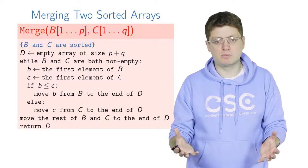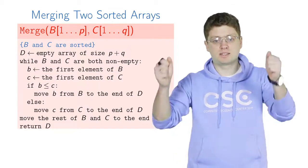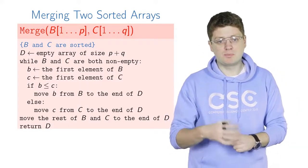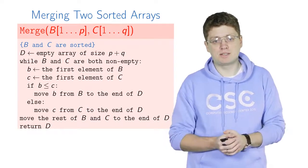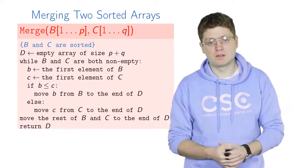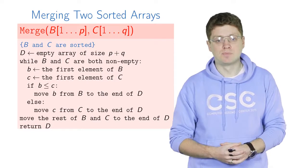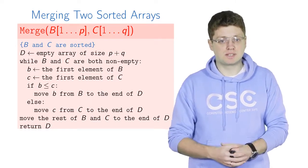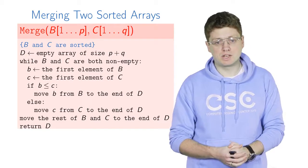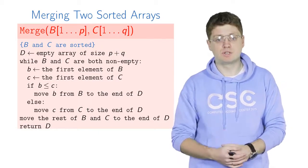After moving the minimum to D we are left with essentially the same problem: two sorted arrays to merge. We again take the first elements of each, compare them, and move the smaller one to D. We keep doing this while both arrays are non-empty. When one becomes empty, we simply copy the rest of the other array to D. This procedure is correct and its running time is P plus Q, since we scan both arrays from left to right exactly once.